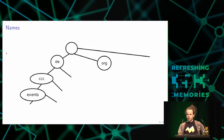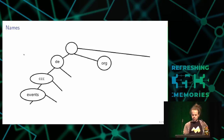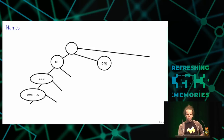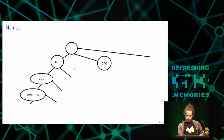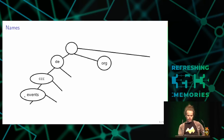Let's look at how names work in DNS. Taking events.ccc.de as an example — the name system is hierarchical, a tree-like structure. We have the root at the top, then below the root we have top-level domains like DE and org. Below DE we have second-level domains like ccc. And below ccc we have the events name.